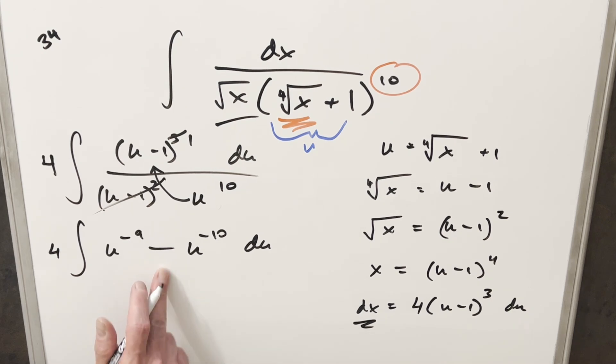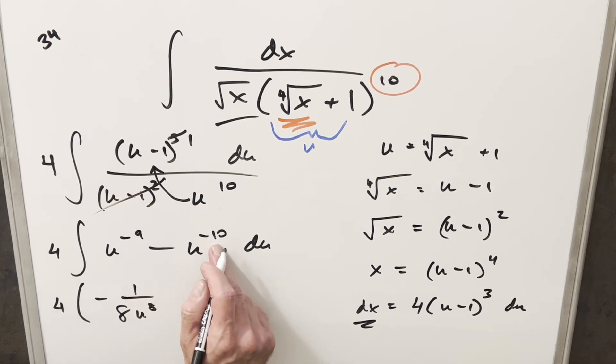And for this we can just use power rule. So doing this we'll have our 4 out front. This first one's going to become minus 1 over 8 u to the 8. And then here we're going to have a minus come out of this. Minus times minus is going to be plus 1 over 9 u to the 9.